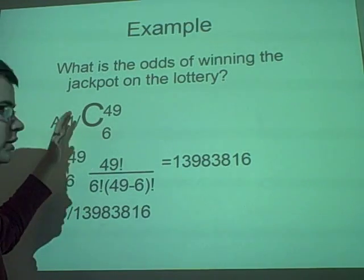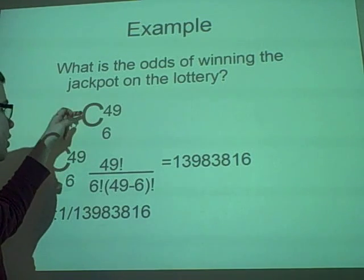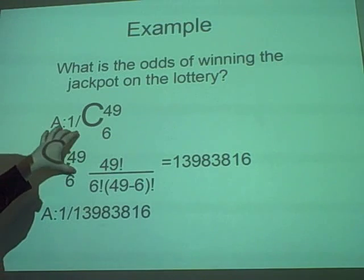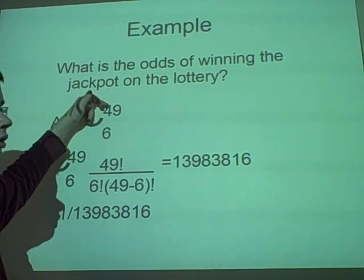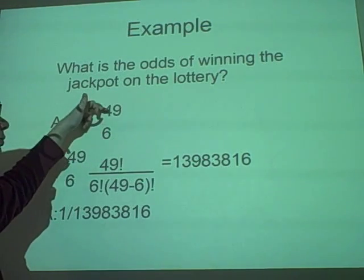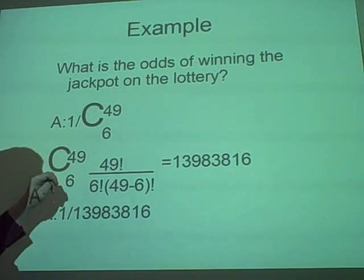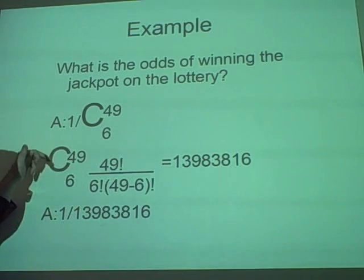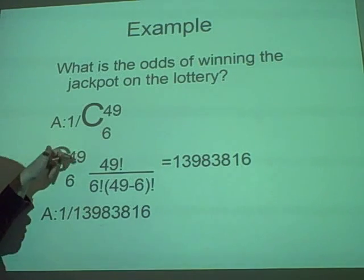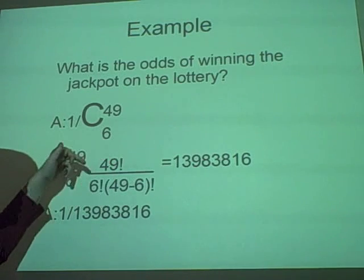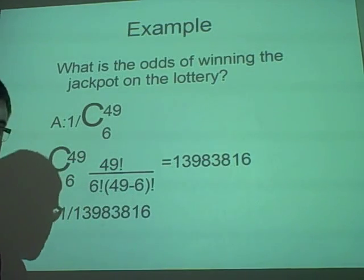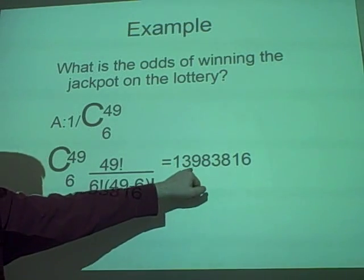So, the answer is one divided by... These numbers are a bit off, but you get the normal idea. Forty-nine balls, but choose six. So, we do one divided by, because this gives us the total numbers of ways. So, choose six out of forty-nine. It's forty-nine factorial divided by six factorial times forty-nine minus six factorial, which is this very big number.